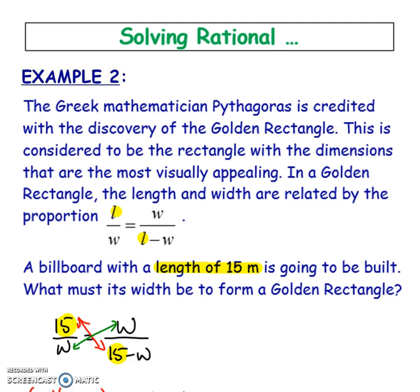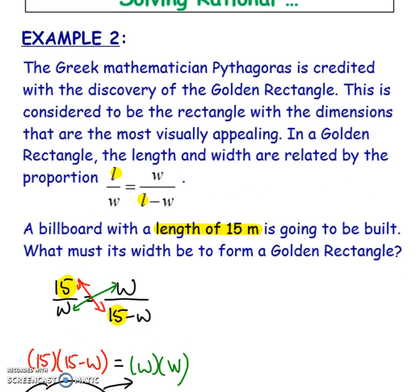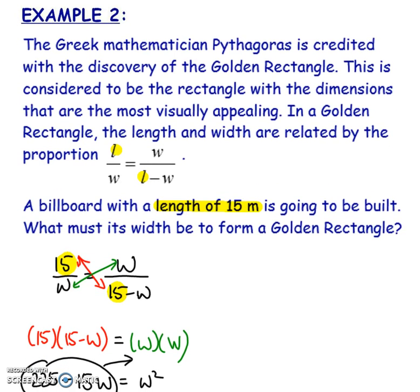I mean, I can show you what a word problem looks like. So this one is saying Pythagoras is credited with the discovery of the golden rectangle. This is considered to be the rectangle with the dimensions that are most visually appealing. In a golden rectangle, the length and width are related by the proportion and they gave you something like this. So notice one equation with one fraction on one side and then another fraction on the other side. Now they're asking, what must its width be if the length is 15? So here are the lengths and I'm just going to write 15 instead. And again, we're just going to cross multiply and solve for W because that's going to be our width.